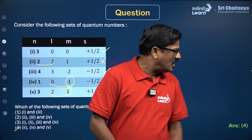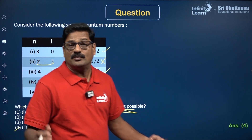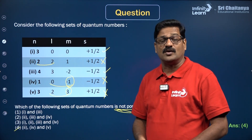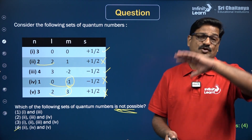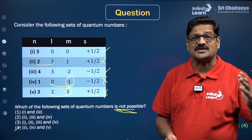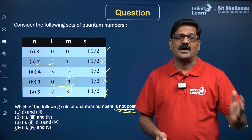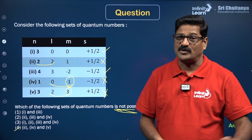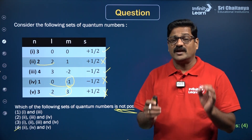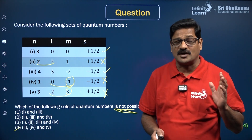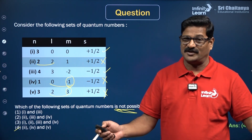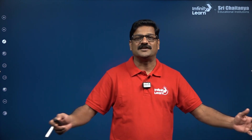In this video we have done a quick recap of all four quantum numbers — principal, azimuthal, magnetic, and spin — and discussed sure-shot NEET questions on quantum numbers. Hope you liked this session. Please like and share with your friends, and subscribe to the Infinity Learn NEET channel. Thank you very much.